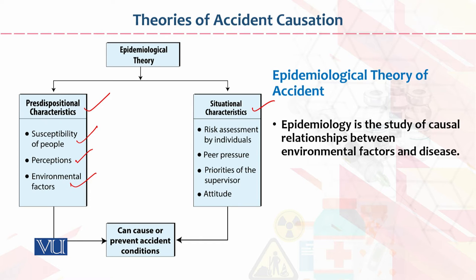Situational factors include risk assessment of the individual, peer pressure — which involves the pressure of your social circle including supervisors and subordinates — and priorities of the supervisor. Often a supervisor has given you a task but wants one particular task to be performed first. Subordinates should perform their duties according to the priorities of the supervisor.